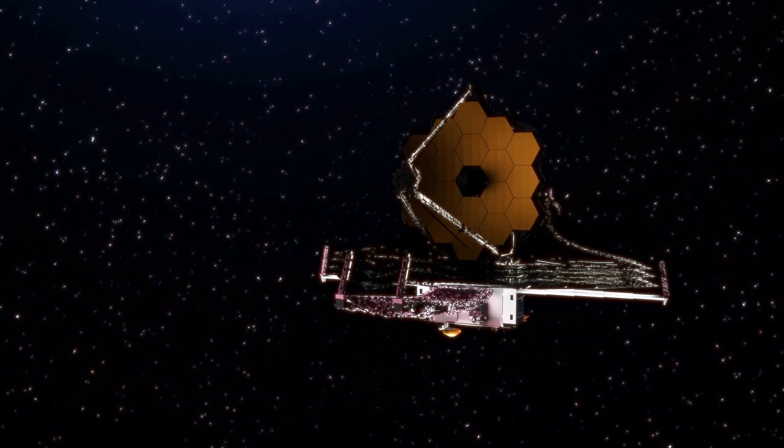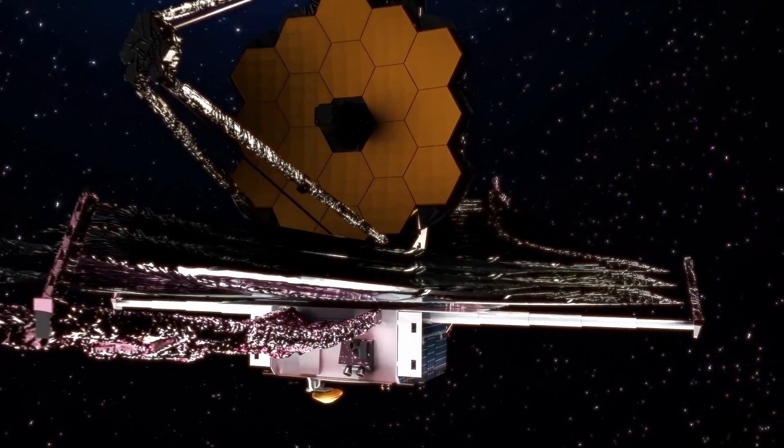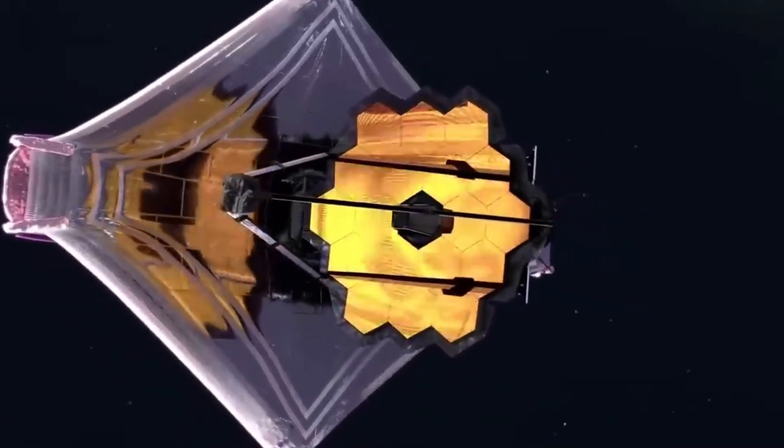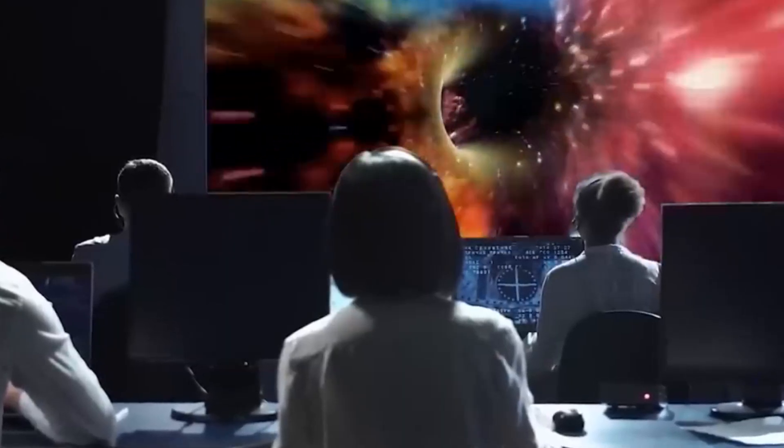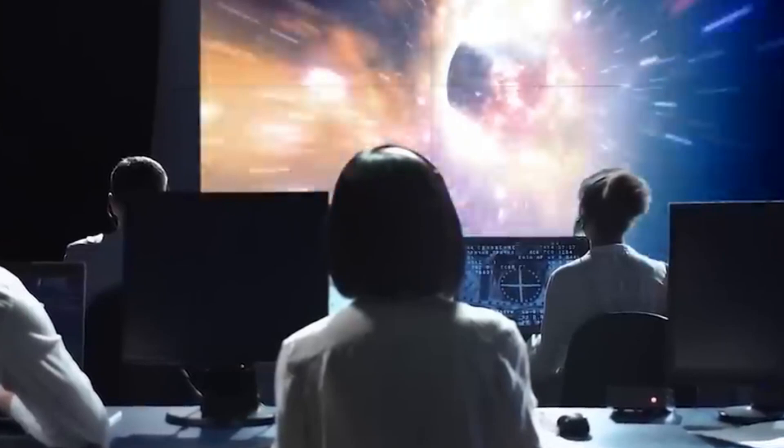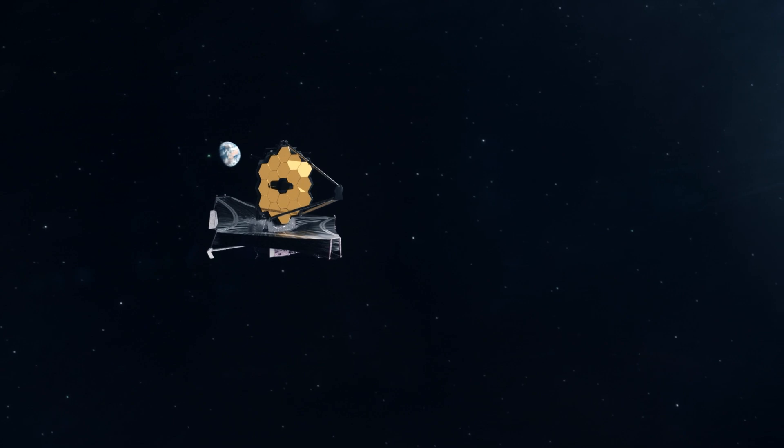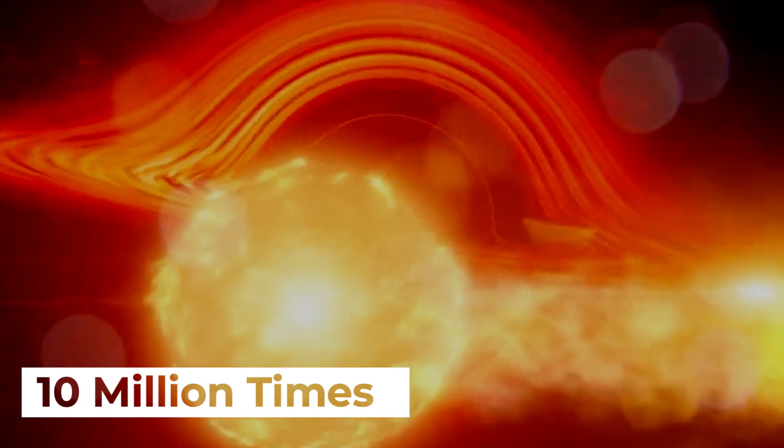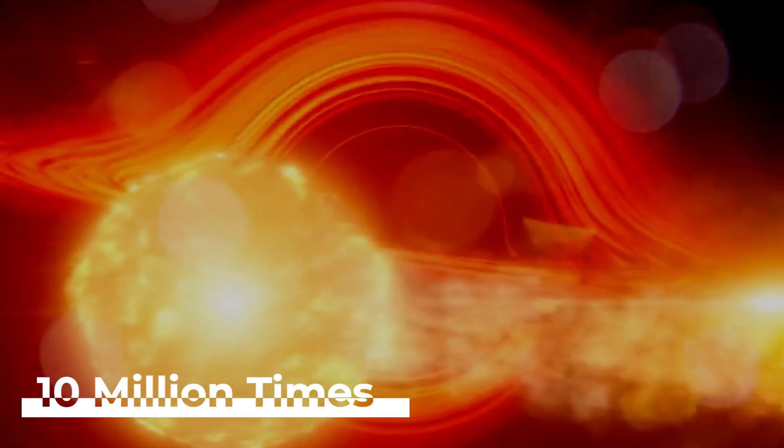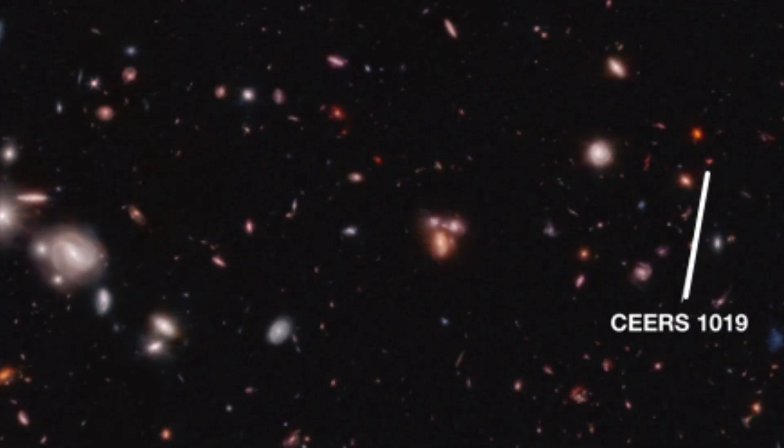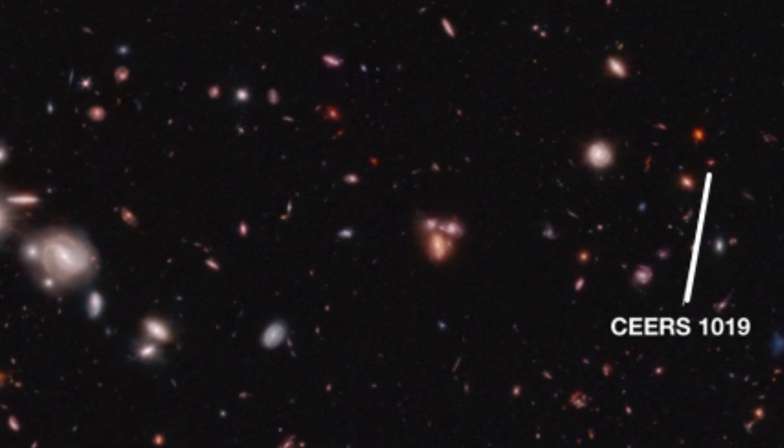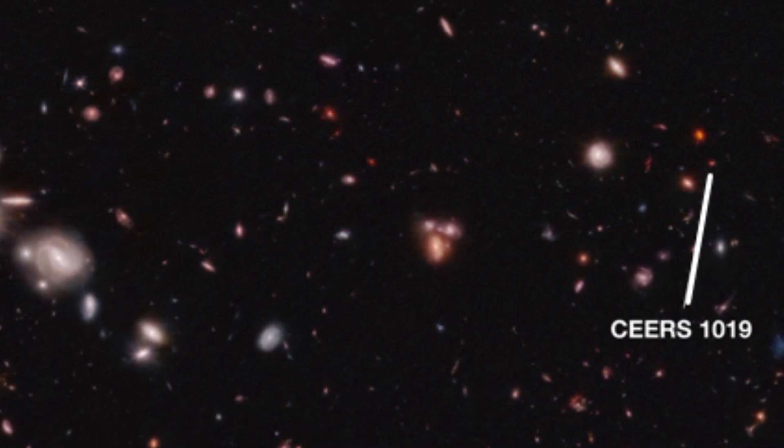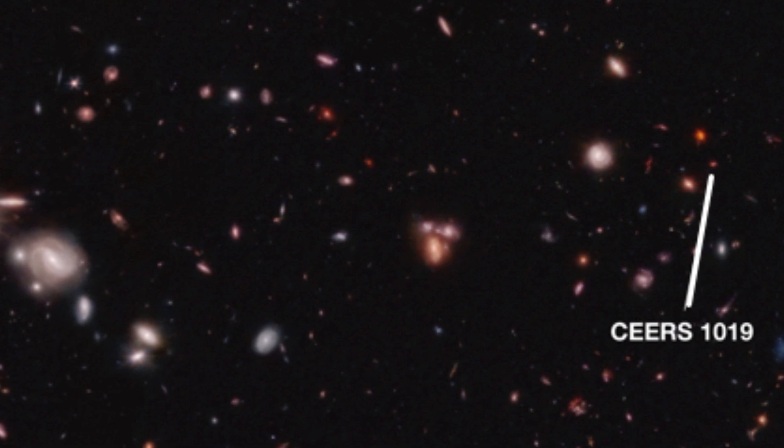The James Webb Space Telescope, with its unparalleled ability to peer deep into space, has uncovered a mind-boggling revelation. Scientists have discovered what they believe to be the oldest known black hole in the universe, owing to the telescope's ultra-powerful sensors that captured this elusive entity. This supermassive black hole, which dwarfs our sun by a staggering 10 million times, existed at the center of a galaxy, CEERS 1019, 570 million years after the universe's inception, a remote time it's difficult to fathom.